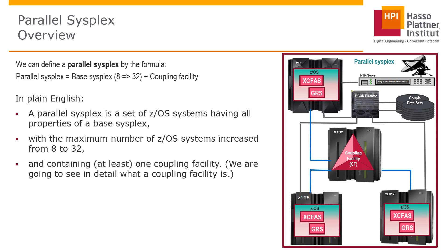Parallel Sysplex means we have an additional device in place. Parallel Sysplex is also a synonym for data sharing, and data sharing means we have an additional device called the coupling facility. This coupling facility is a shared memory — memory shared between the operating systems running in such a Sysplex environment. The number of systems that can be set up is extended from 8 to 32, and we have at least one coupling facility for this data sharing.